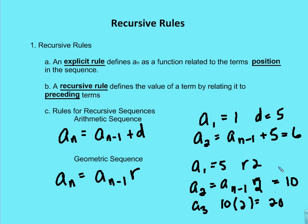As I increase the number of terms, I continue to find out what those subsequent terms are. To find a term, you need to know its prior value — and that's what a recursive rule is.